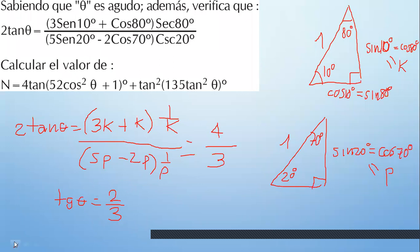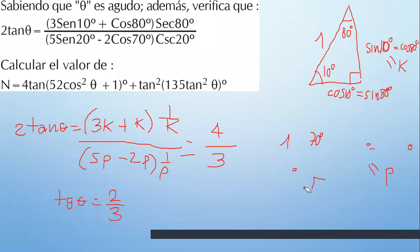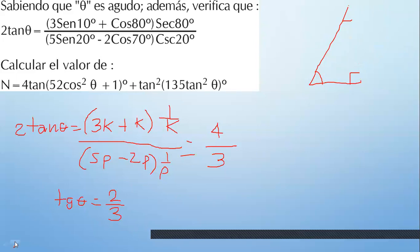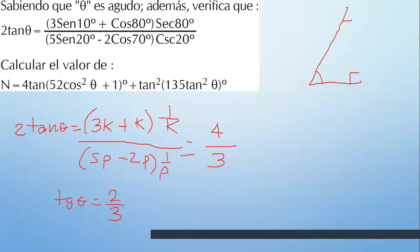Tangente de theta es dos tercios. Si tangente es dos tercios, ¿qué vas a hacer? Graficar: opuesto 2, adyacente 3. ¿Y qué te están pidiendo? Cosenos. Necesitas hipotenusa. 3 al cuadrado más 2 al cuadrado: 4 más 9 es 13. Le sacas raíz: raíz de 13.